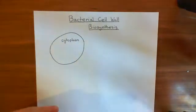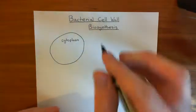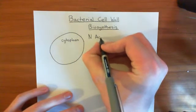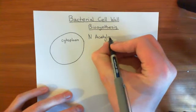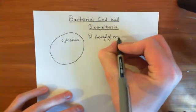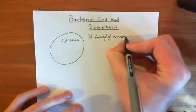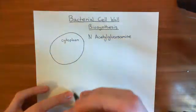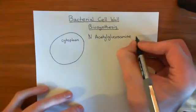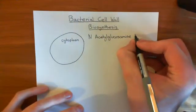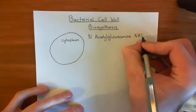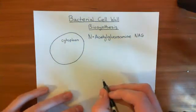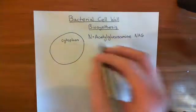The starting material out of which we build bacterial cell walls is a molecule known as N-acetylglucosamine. We are going to see this molecule a lot — glucosamine is the basis for it all. It will often be abbreviated to NAG, rather than writing N-acetylglucosamine out continually.